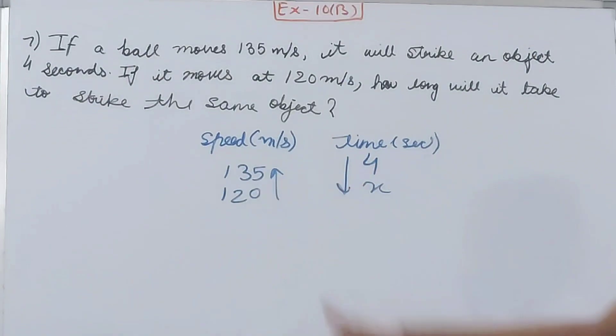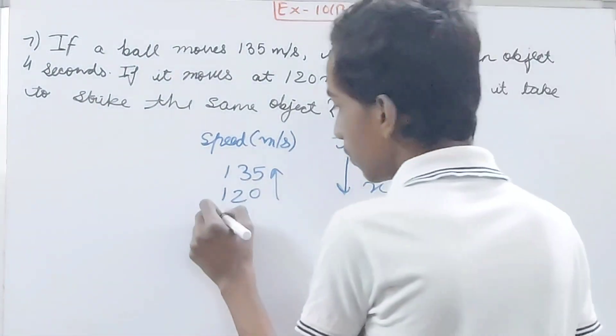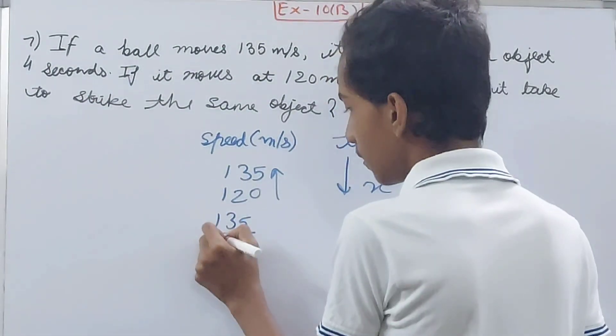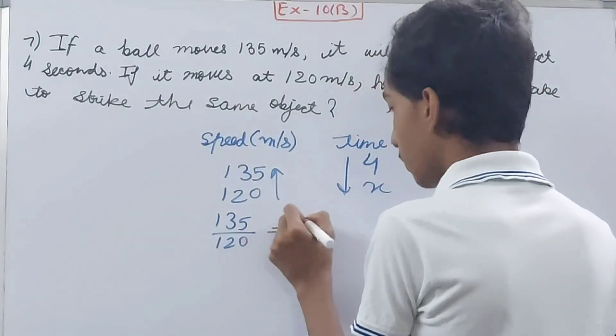Now, 135 by 120 is equal to x by 4. 135 upon 120 into 4 is equal to x.